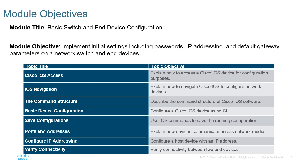We have a table that summarizes what we're going to be doing in this module: explaining how to access the Cisco operating system for configuration purposes, how to navigate the Cisco OS to configure the network, describing the command structure, making basic device configurations, saving those configurations, explaining how devices communicate across network media, configuring IP addresses on host devices, and verifying connectivity between two end devices.